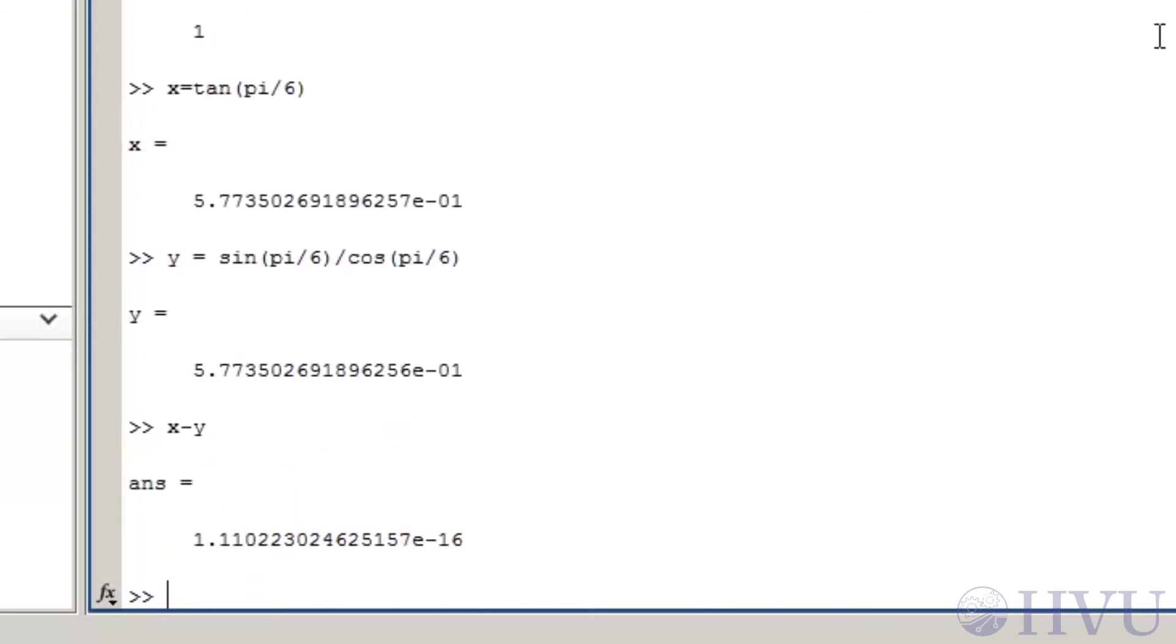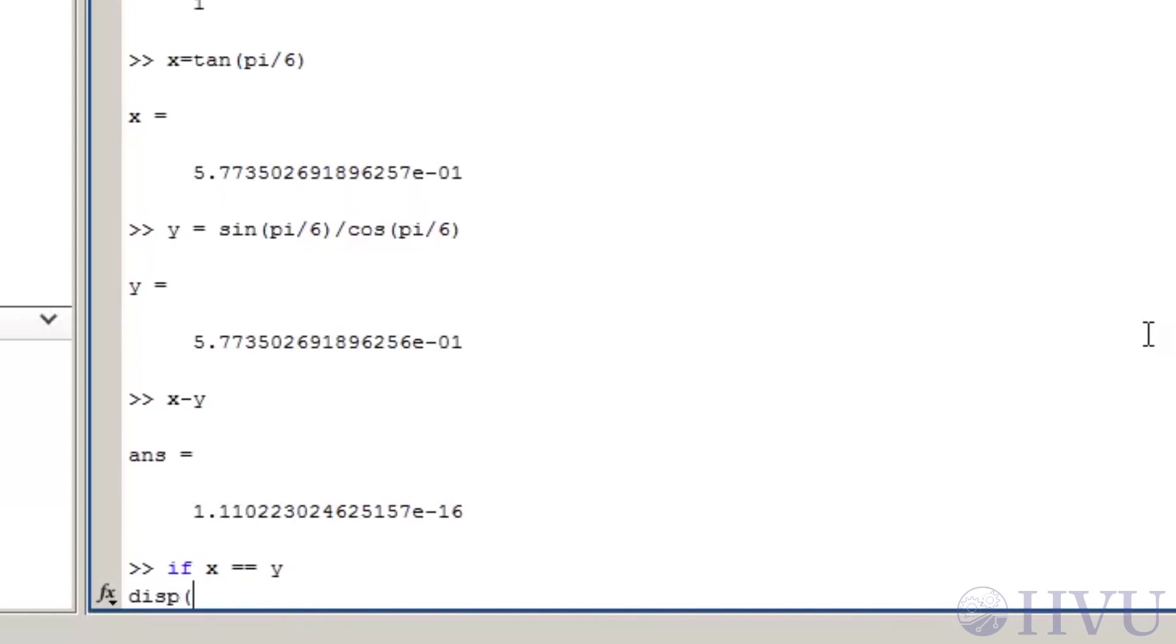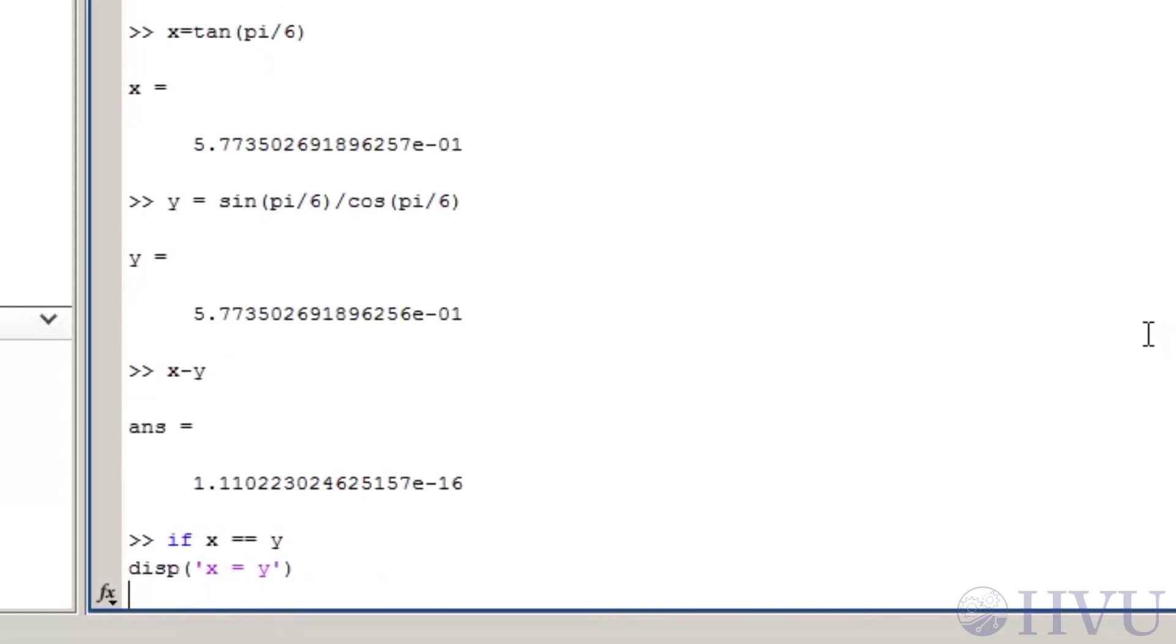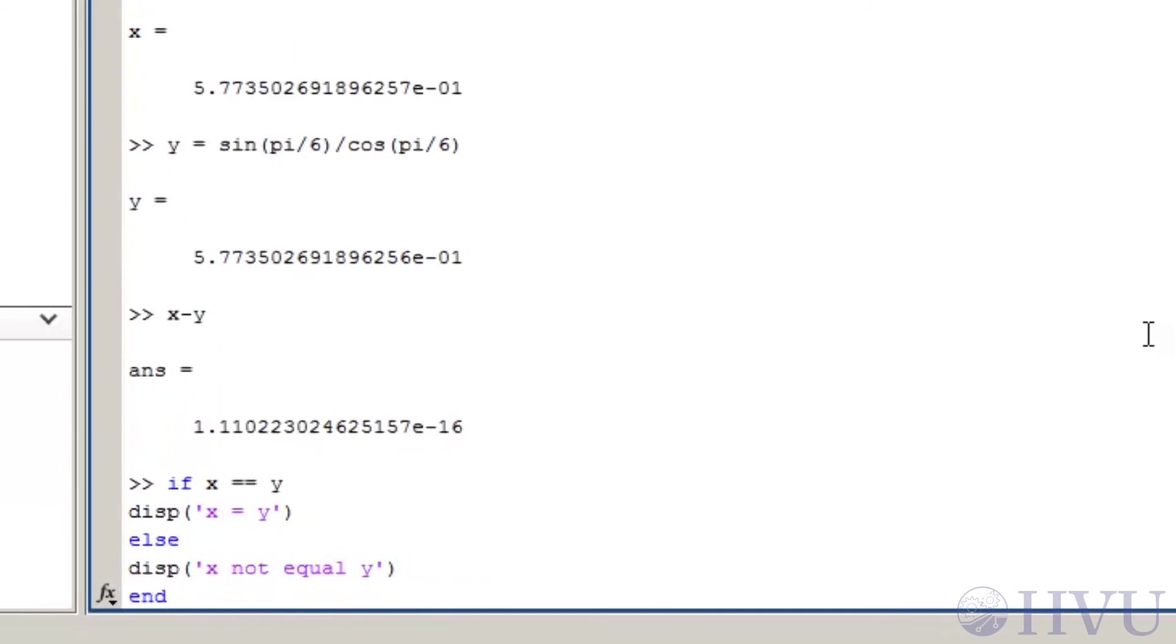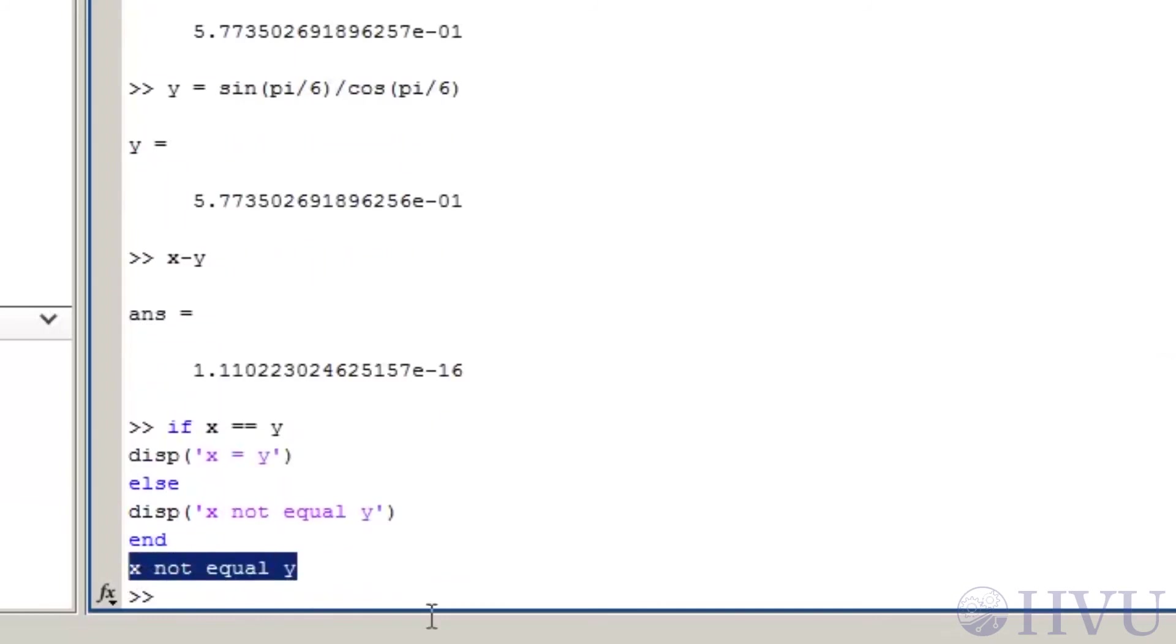If I take the difference between these, I should get 0. So, x minus y is not 0. It probably comes as no real surprise now that the result isn't exactly 0. However, one might think that a number that's on the order of 10 to the minus 16th is close enough to 0 to make no difference. Most of the time, that would probably be correct. But relational and logical operations, for example, don't really leave any room for error. Let's use these values to make a decision in an if construction. So, if x is equal to y, I'll display x equals y. If it's not, I'll display x not equal to y. And end. MATLAB recognizes the two numbers as not being exactly equal.